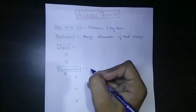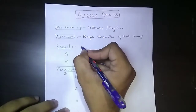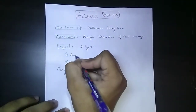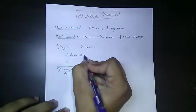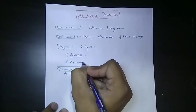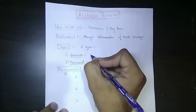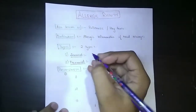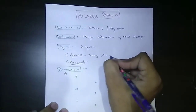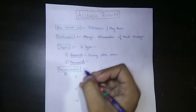Allergic rhinitis is of two types: seasonal or perennial. Seasonal means it occurs during the pollen season when pollen sheds from the plants. Perennial occurs throughout the year.